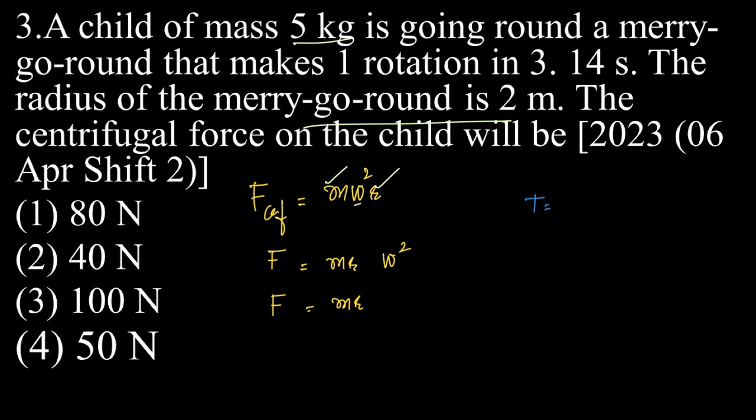See, we know that time period is equal to 2π by omega. So what is omega? Omega is equal to 2π by T. Now, what is omega squared? Omega squared will be 2π the whole squared by T squared, which is 4π² by T². So we have m r into 4π² by T².